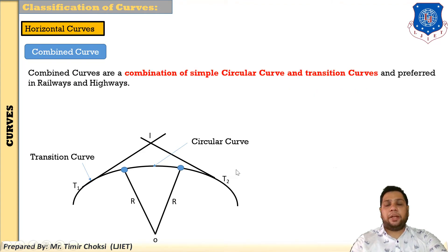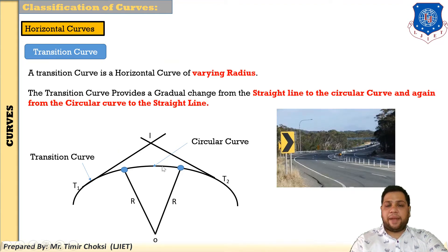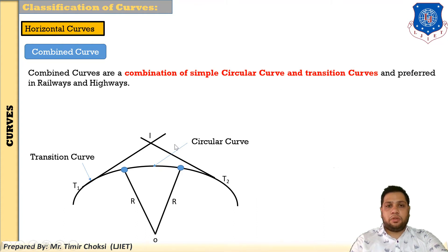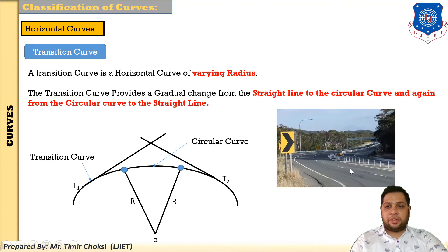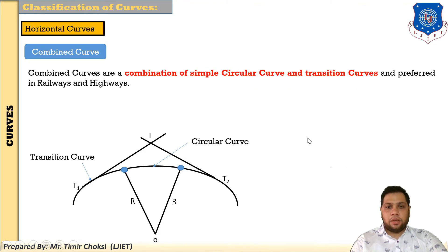The last horizontal curve type is the combined curve. A combined curve is a combination of a simple circular curve and a transition curve. Here a straight line transitions into a transition curve, then a simple circular curve is used. This type of road design is based on a combined curve. It is preferred in railway and highway construction. This concludes the horizontal curves: simple circular, reverse curve, compound curve, transition curve, and combined curve.